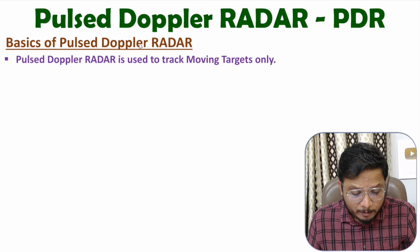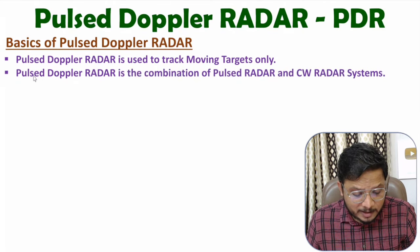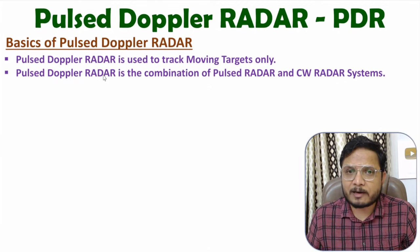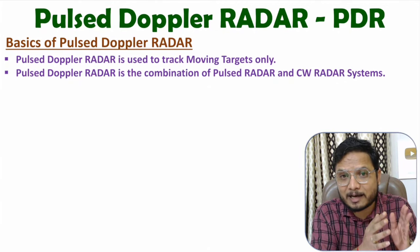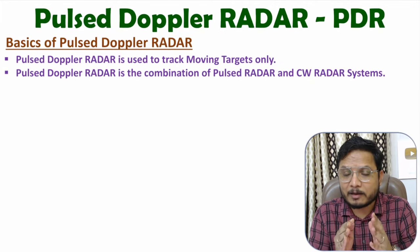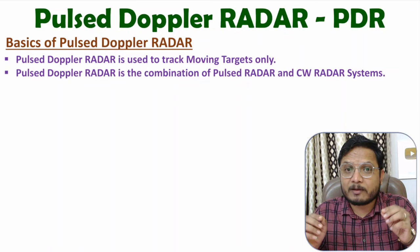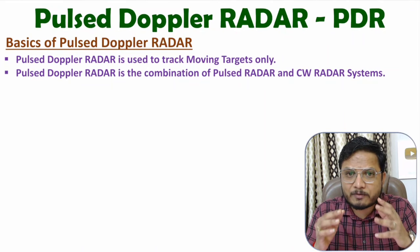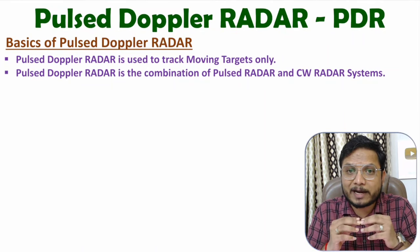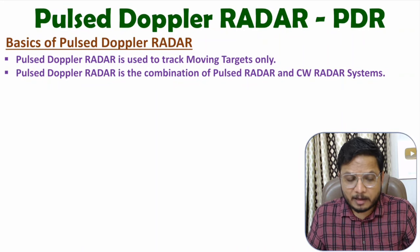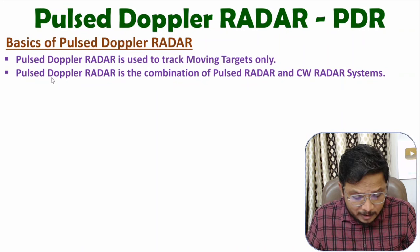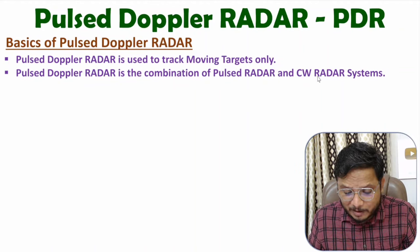This Pulsed Doppler Radar is a combination of Pulsed Radar System as well as Doppler Radar System. In my video lecture series of Radar Engineering, I have already covered Pulsed Radar as well as Doppler Radar. Pulsed Radar is used to identify the range of the target, while Doppler Radar — that is continuous wave radar — is used to identify motion of the target. So Pulsed Doppler Radar is a combination of Pulsed Radar as well as CW Radar.